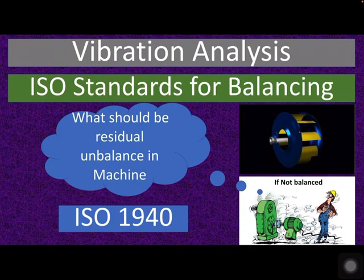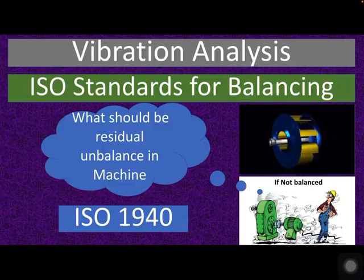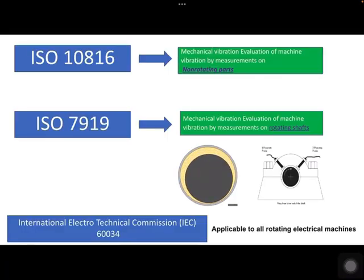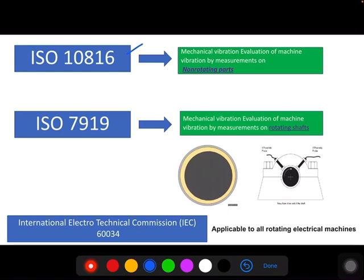Hi friends, welcome to Mega Technical Hub. In the last session we studied about the acceptable limit of vibration for any rotating equipment. We discussed about ISO standard 10816, which is mainly used for measuring vibration velocity in mm per second on non-rotating parts. It has six parts, mainly one to six, and part one and part three are mostly used in industry. If you want to understand clearly about ISO 10816, you can refer to my previous video.